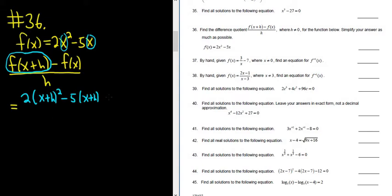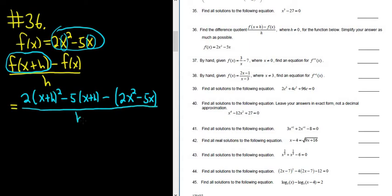Then we have the minus sign, and then now we have to write down f of x. But f of x is two terms, so it's really important to use parentheses. So this will be 2x squared minus 5x. And all of this stuff here is being divided by h. Good stuff.